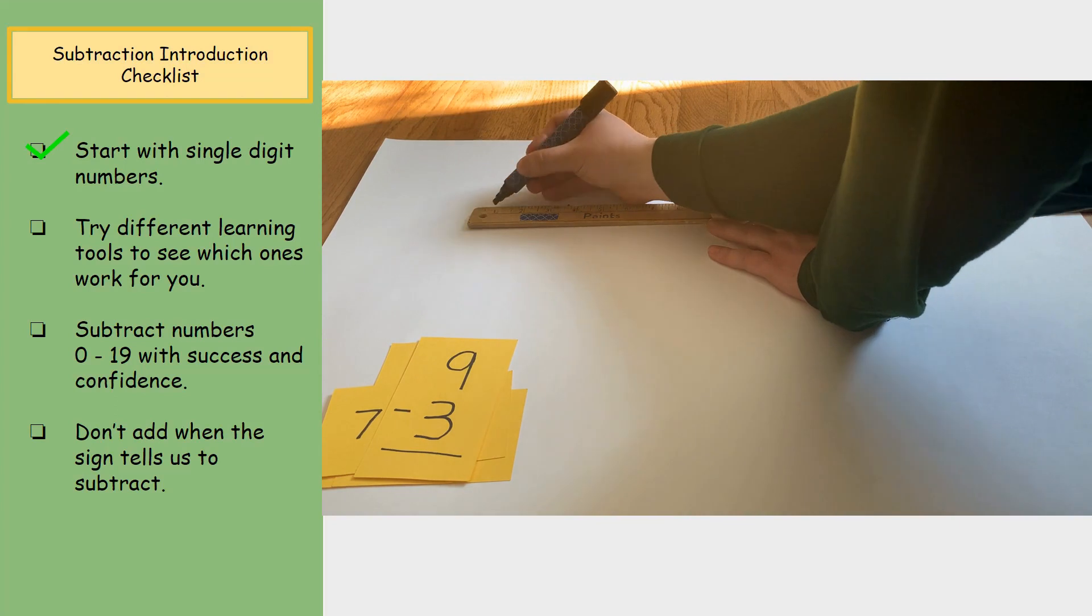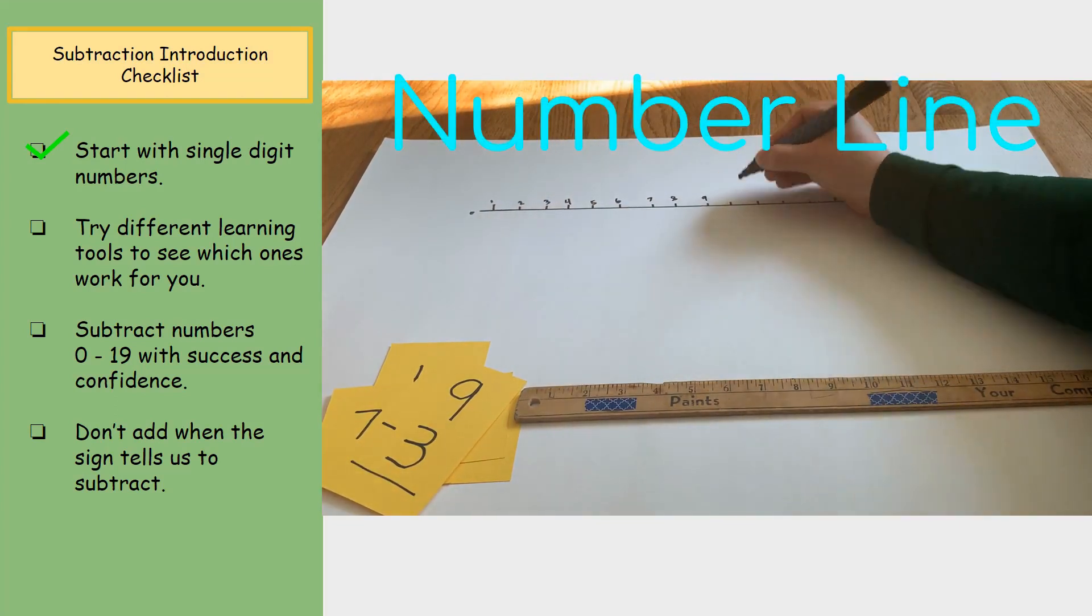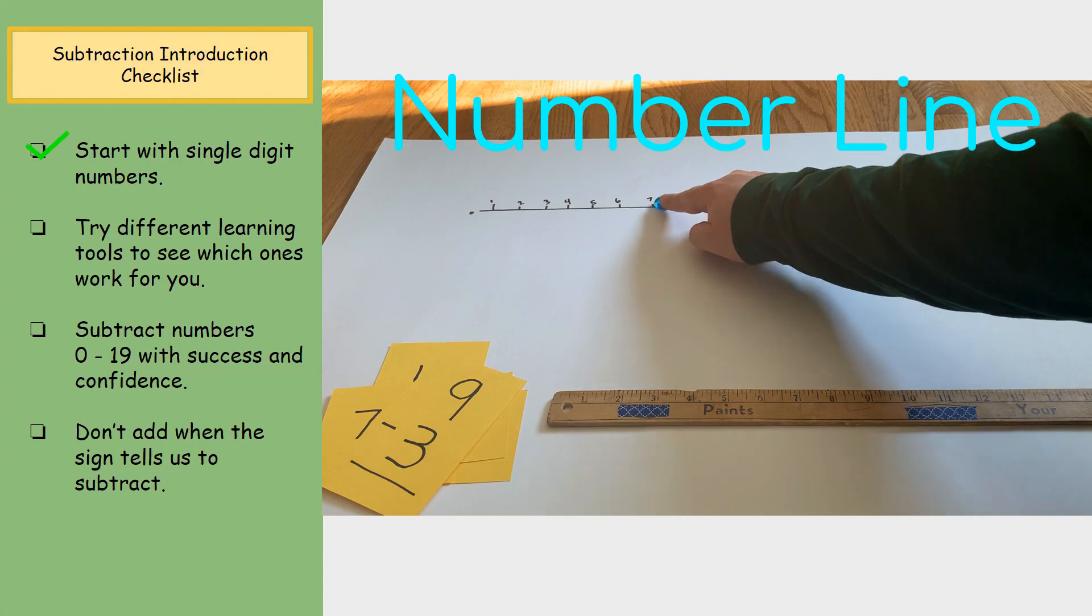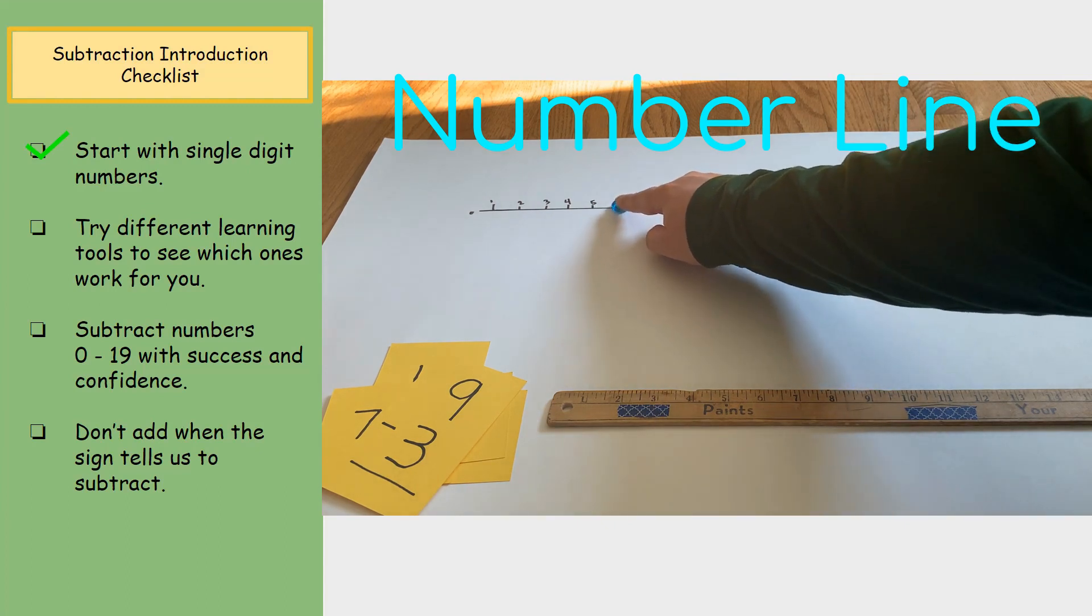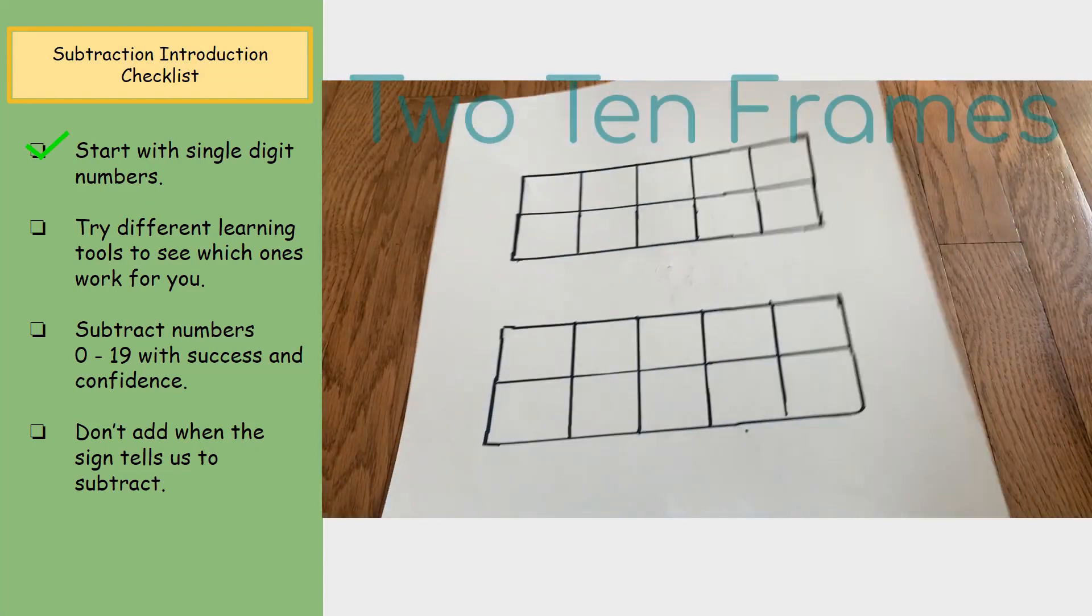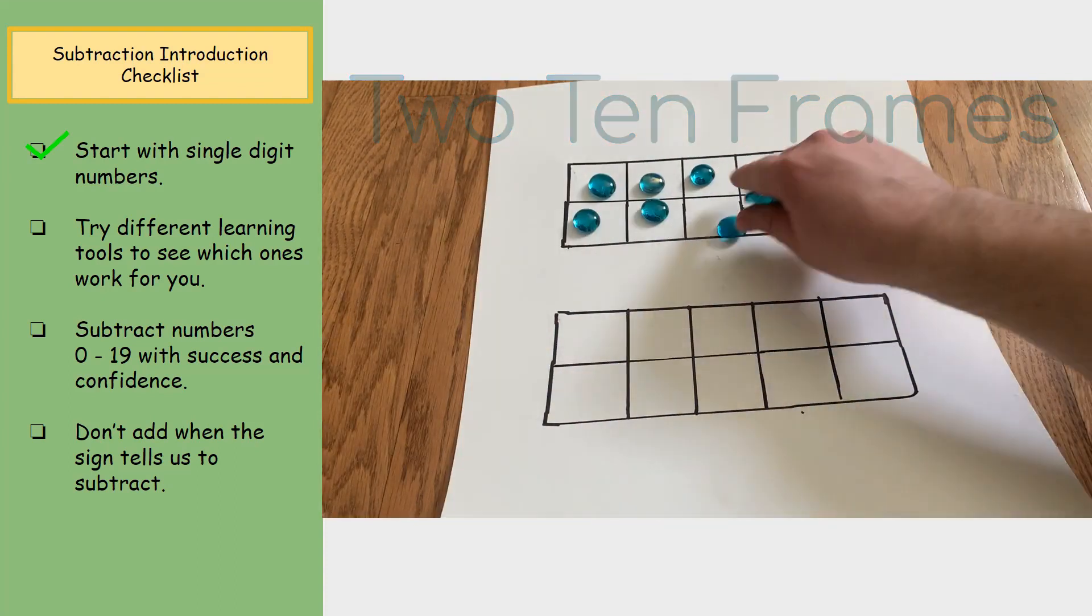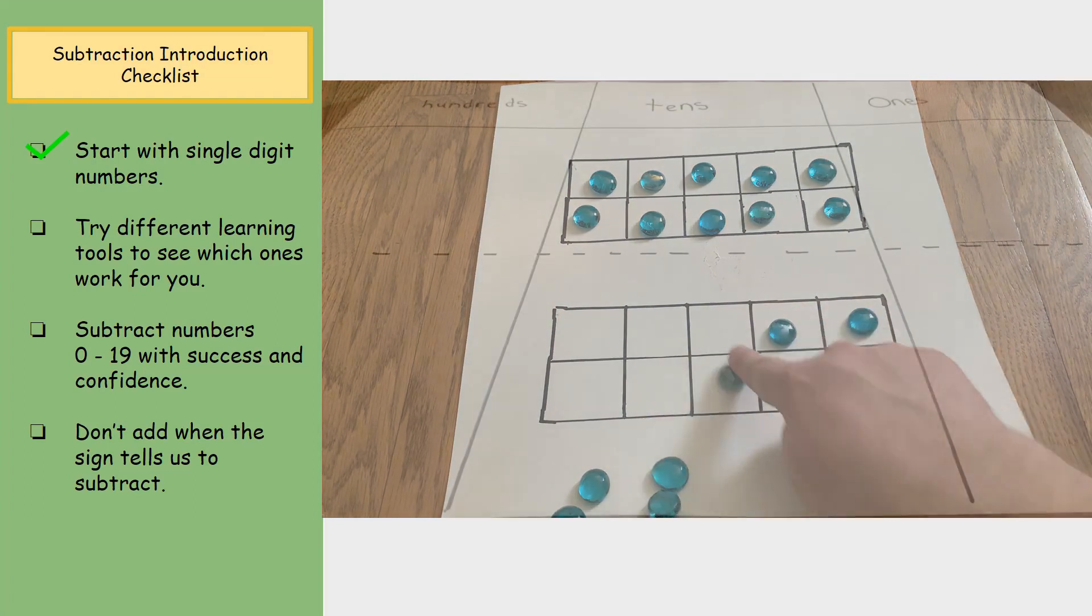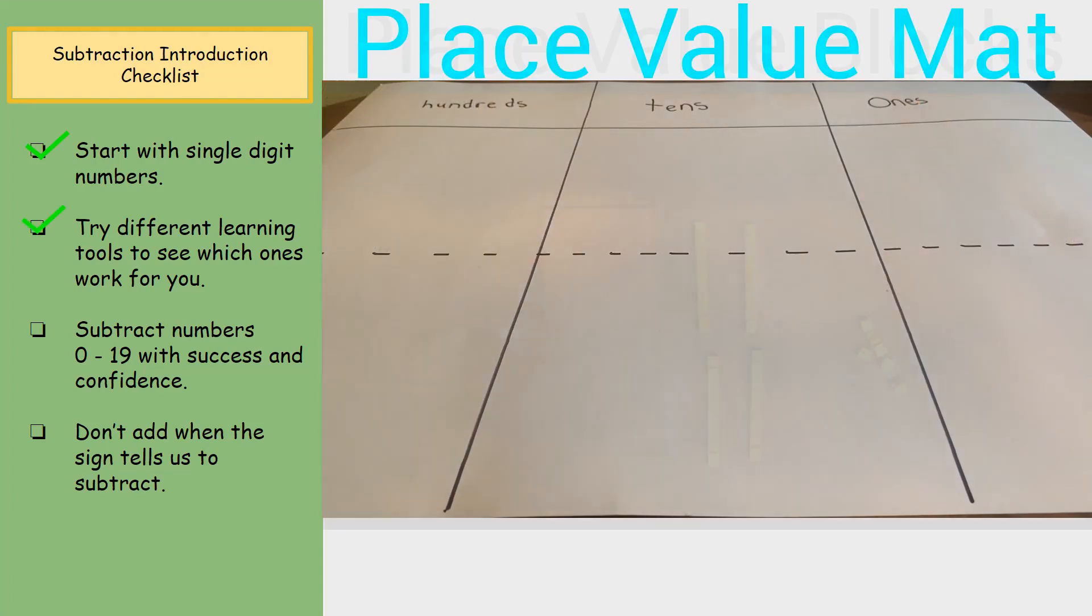I'd recommend trying a number line to count on, two tens frames to set up questions with objects, or a place value map to use with place value blocks.